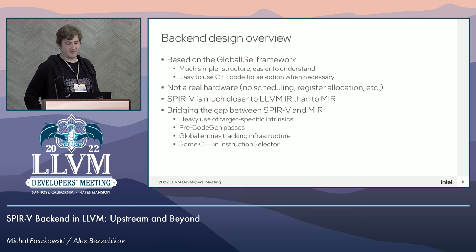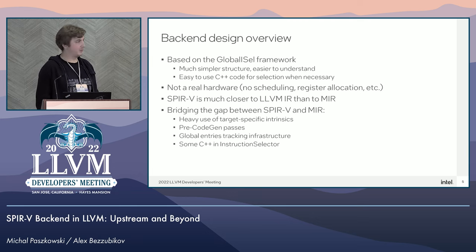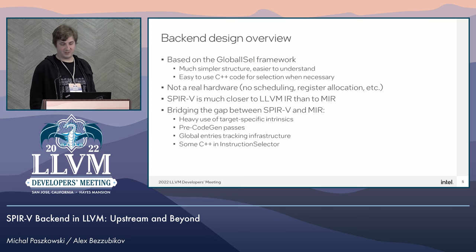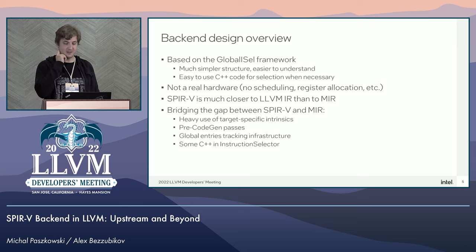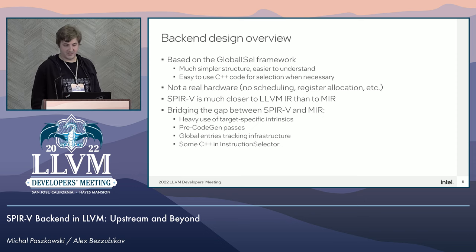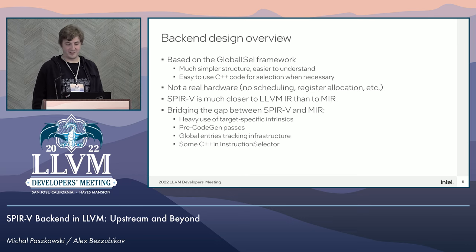What are the key aspects of our backend design? First of all, it is based on the Global ISel framework, which has a pretty clear structure. It's mostly written in C++, and that's why, in our opinion, it's much simpler than SelectionDAG. It doesn't employ TableGen as much as SelectionDAG-based backends, and that's why it's especially simple for backend newcomers like we were when we started this project.